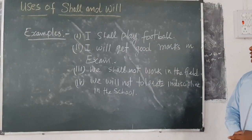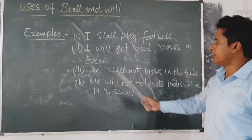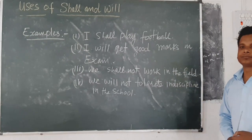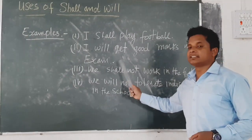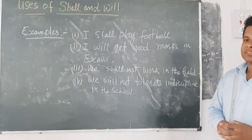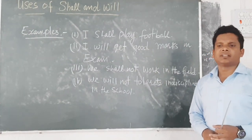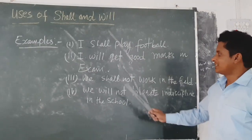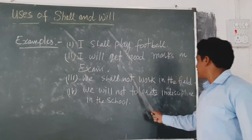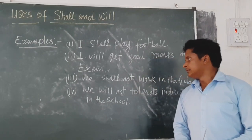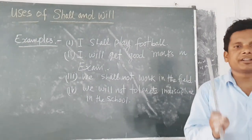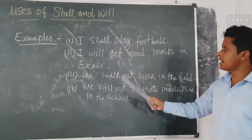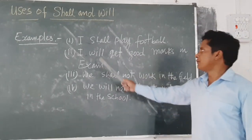Another sentence: we shall not work in the field. And the next sentence is: we will not tolerate indiscipline in this school. In the third sentence, there is no emotion — it is just a simple future arrangement. The fourth sentence — we will not tolerate indiscipline in this school — is showing a strong warning. That is why we have used will. We, being first person, and with them we have used will.